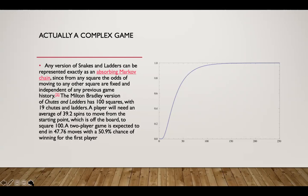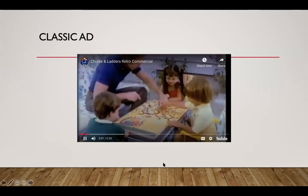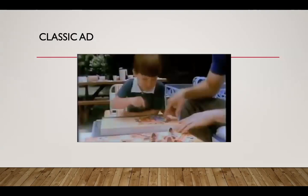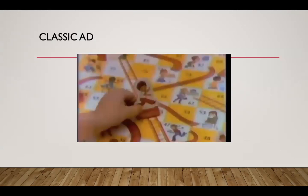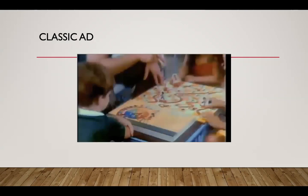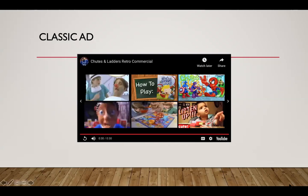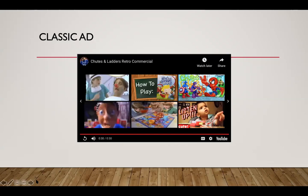So if you ever play Chutes and Ladders with me, I'm going first! Here's the classic ad — it's a game about climbing up and sliding down. You can land on something good like rescuing a kitten in a tree and go up a ladder, or break a cookie jar and slide down. First one to climb to 100 wins. The game mechanics are fairly simple, but simple rules can produce very complex games.